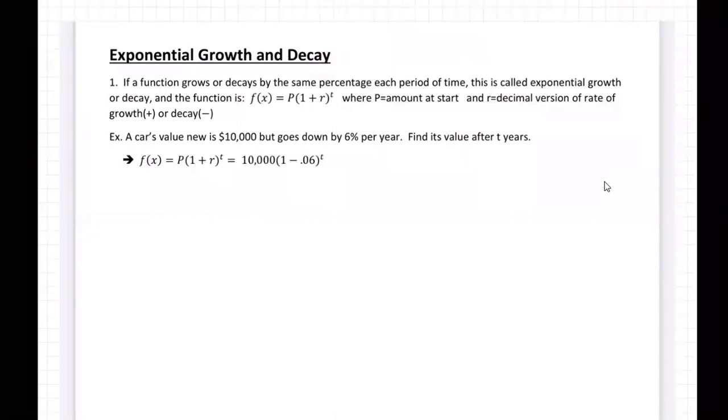So how do we do this? Well, if you go to the notes, here it is. This is from the exam three notes. And I'm going over the topic exponential growth and decay. And what does it actually say there? If a function grows or decays by the same percentage each period of time, this is called exponential growth or decay. And the function is f of x equals P times 1 plus r all to the t power, where P equals the amount at the start and r equals the decimal version of the rate of growth positive or decay negative.